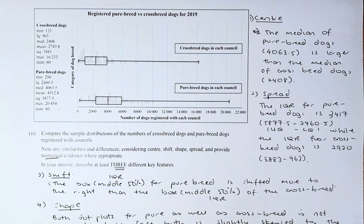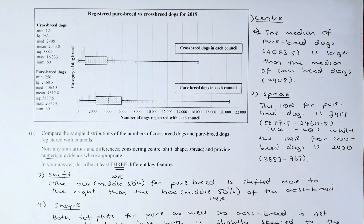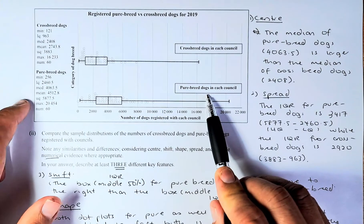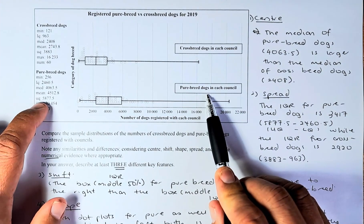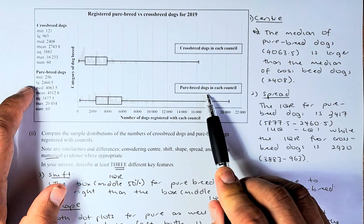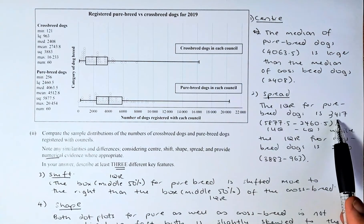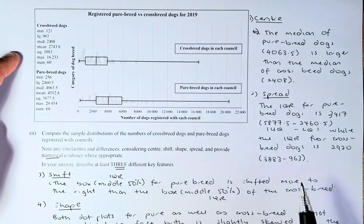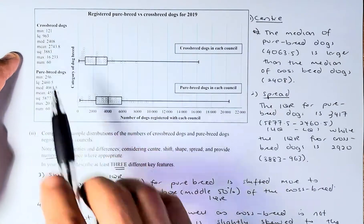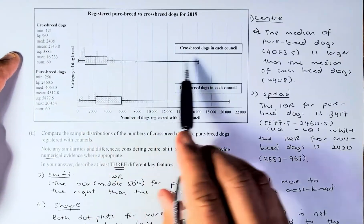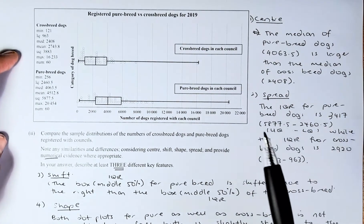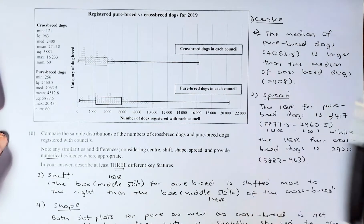Next, we compare the spread. The spread could be the range or the interquartile range, but for level one it is more useful to use the interquartile range. The interquartile range for purebred dogs: upper quartile minus lower quartile, so 5877.5 minus 2460.5 gives 3417. The interquartile range for crossbred dogs: upper quartile 3883 minus lower quartile 963 gives 2920. The interquartile range for purebred dogs is larger than for crossbred dogs.